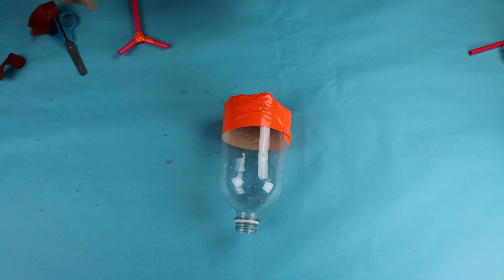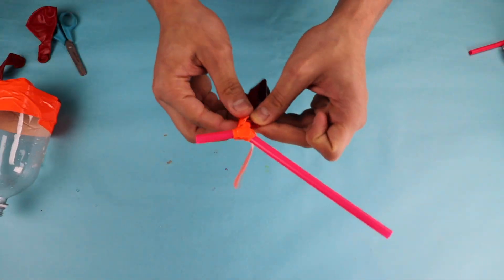Step nine, for this step, you're going to take one of your balloons and put it on each of the ends of the straw thing you made. From here, you want to make sure you tape it in a way that you can still blow and air can travel into the balloon.